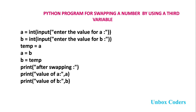The temp value is stored back into b. Now the numbers are swapped. After swapping, we print the output — we print the value of a and print the value of b.